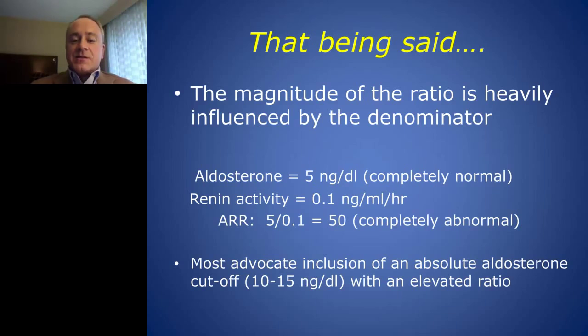For this reason, most experts advocate that in addition to an elevated aldosterone-renin ratio, you should also have an absolute cutoff for aldosterone in the upper range.